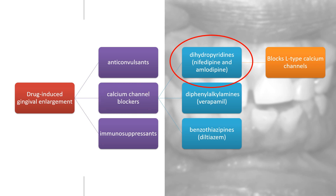Calcium channel blockers dilate arteries by inhibiting the flow of extracellular calcium into cells through voltage-operated calcium channels, causing relaxation of vascular smooth muscle cells, thus effectively reducing blood pressure. Based on their vascular and cardiac selectivity, calcium channel blockers can be classified into three main groups: dihydropyridines, which include nifedipine and amlodipine; diphenylalkylamines, or verapamil; and benzothiazepines, which is diltiazem.